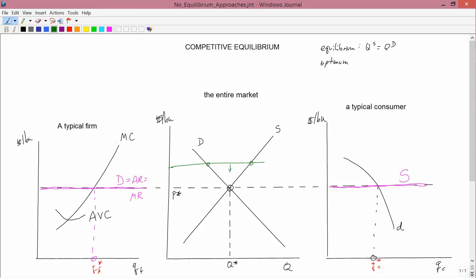Similarly, suppose you were at a below P star price. Then quantity demanded is here and quantity supplied is here, so you have excess quantity demanded. So consumers go to the stores. They don't find as much stuff as they want, so they bid the price up. And so you get a price going up.